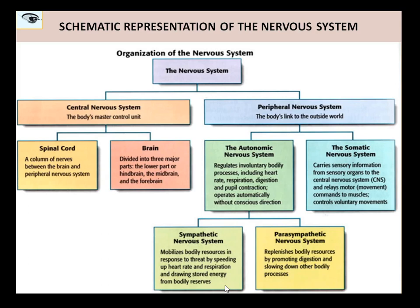Coming to the spinal nerves, there are 31 sets of spinal nerves coming out or reaching to the spinal cord. What are the functions of these spinal nerves? Two important functions. The sensory fibers of the spinal nerves are collecting sensory information from all over the body — not the head region — and send it to the spinal cord, from where it is carried to the brain. Motor impulses come down from the brain and are sent to the muscles by the motor fibers of the spinal nerves.